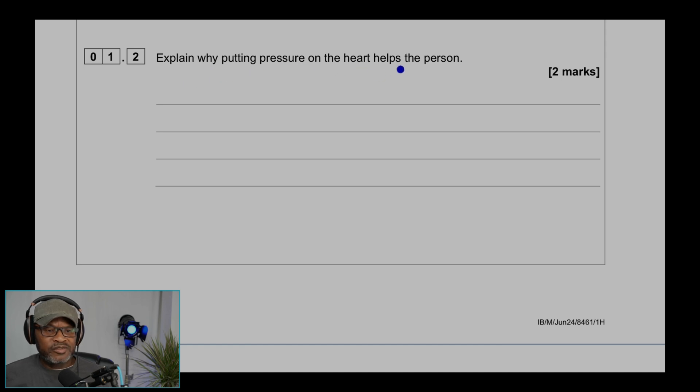Question 1.2: Explain why putting pressure on the heart helps the person. When it pushes or moves the blood to flow to get oxygen gas around the body. That's your tumor.